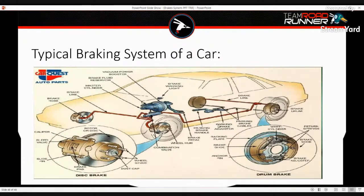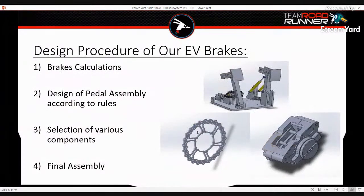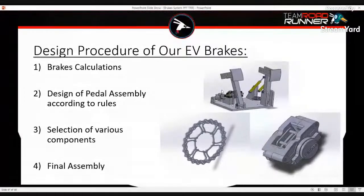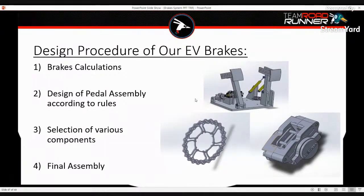In a conventional vehicle braking network, disc brakes are used on the front wheels and drum brakes on the rear wheels due to the difference in braking effort required. In our EV formula student vehicle, the design process includes brake calculations, design of the pedal system according to rules, selection of components, and final assembly. The pedal assembly includes an accelerator and brake pedal. If no transmission is used, only the accelerator and brake are needed. The rotor and caliper assembly is also shown.